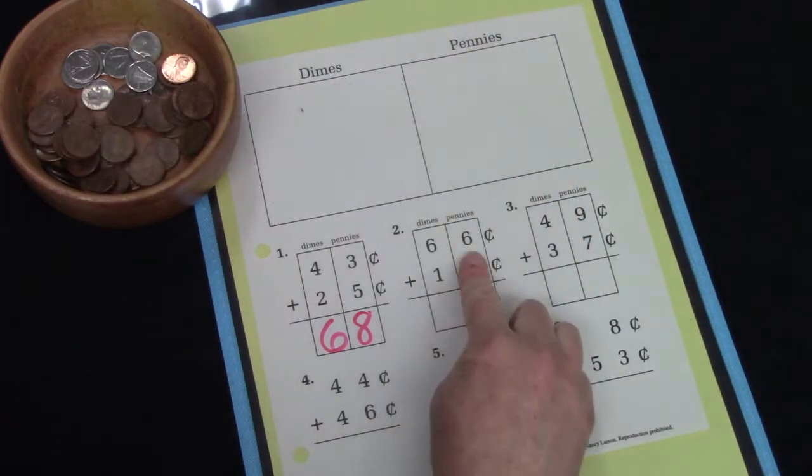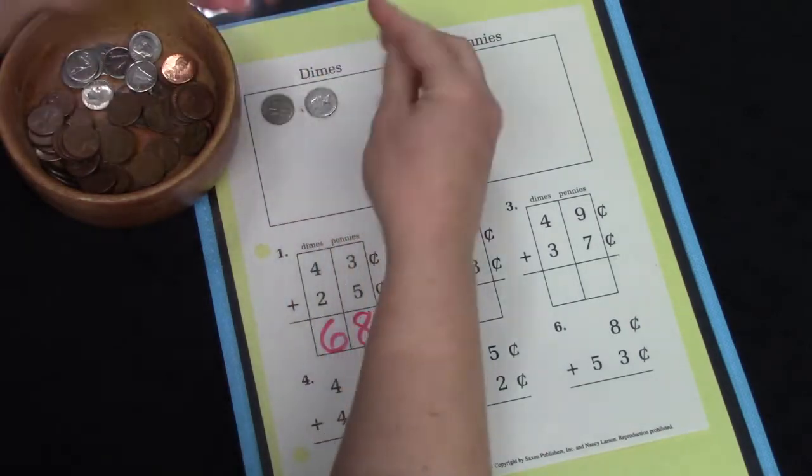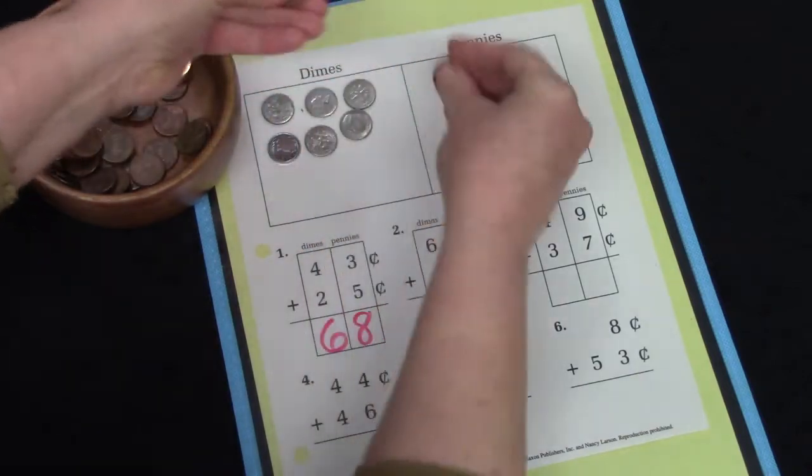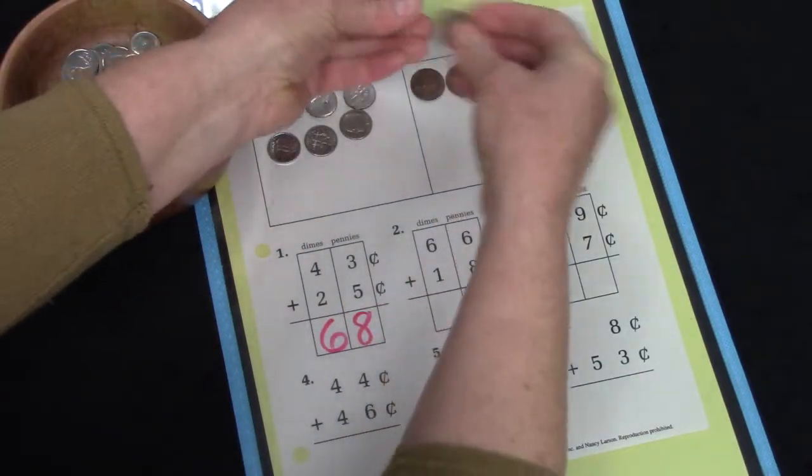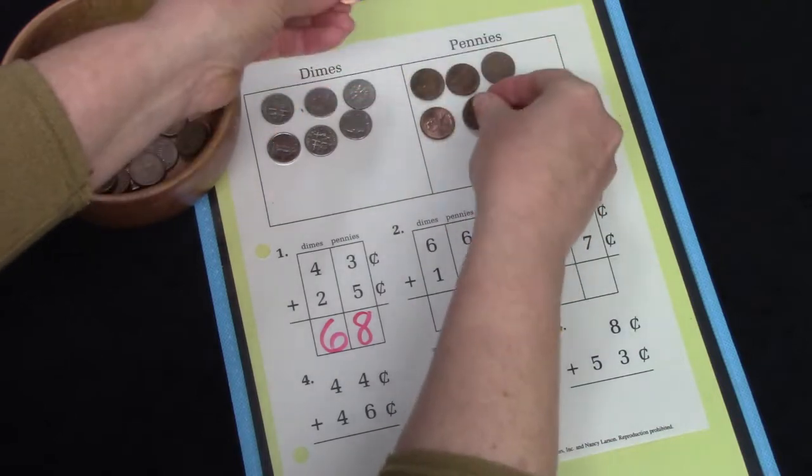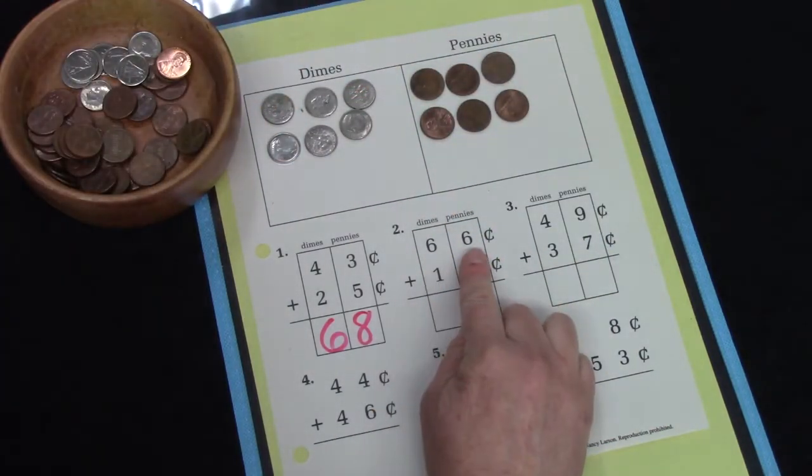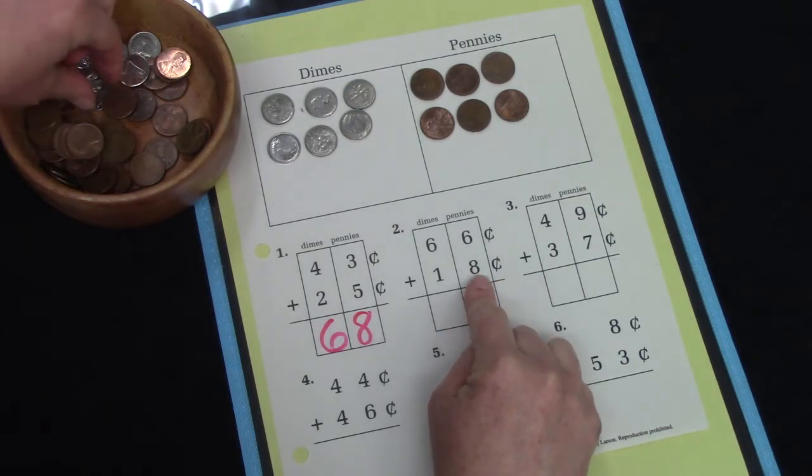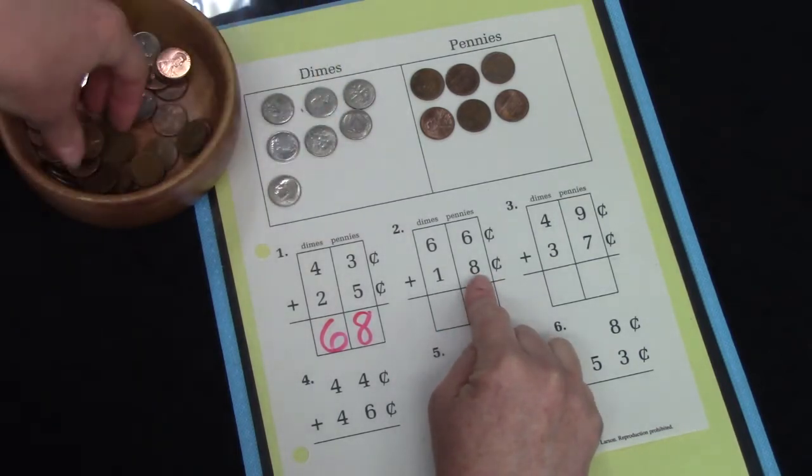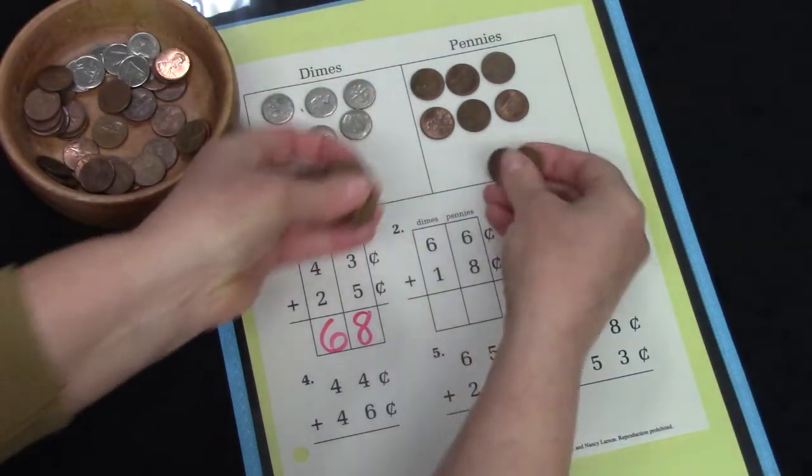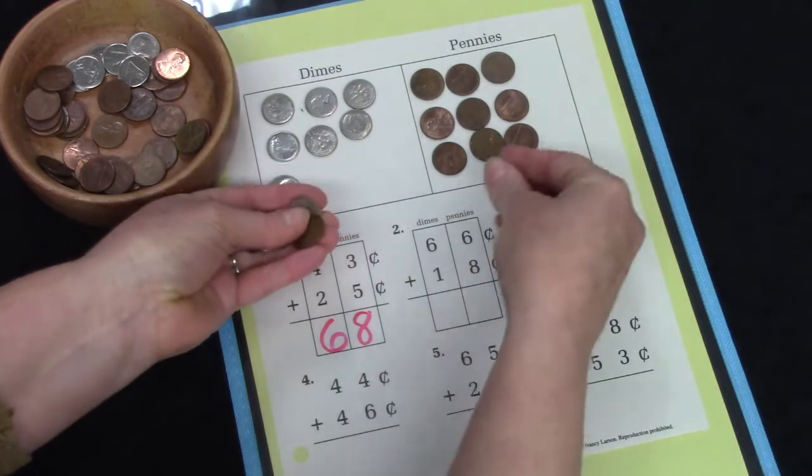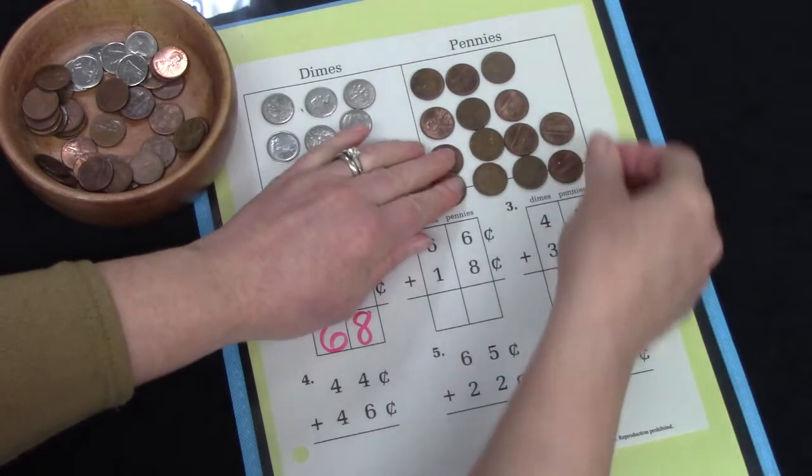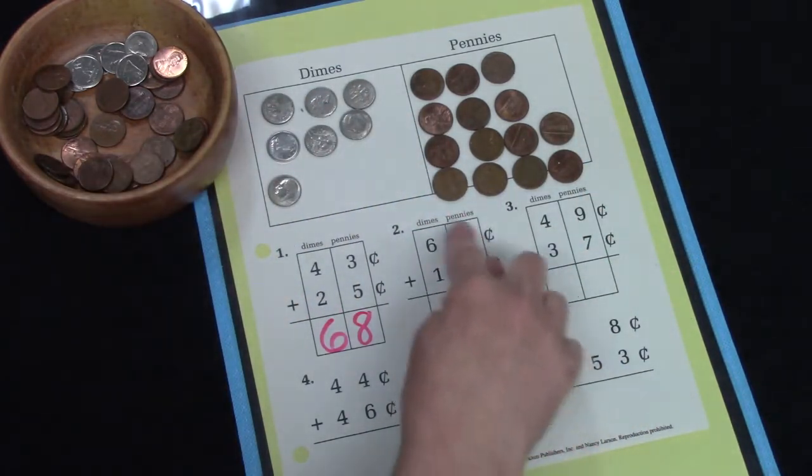This question says 66. We have 66 cents. And now we're going to add 18 cents. 18 is 1 dime and 8 pennies: 1, 2, 3, 4, 5, 6, 7, 8.